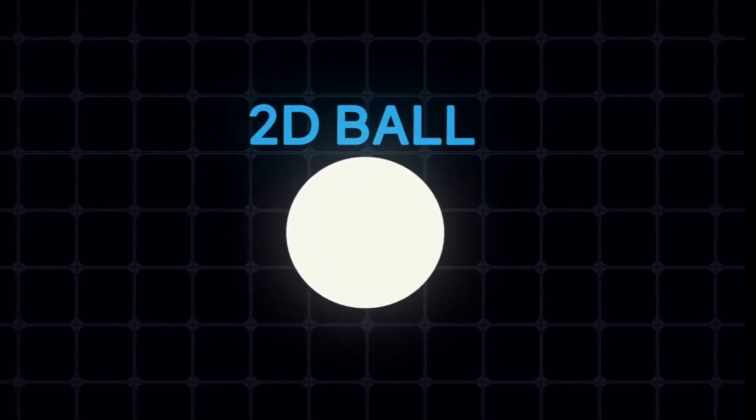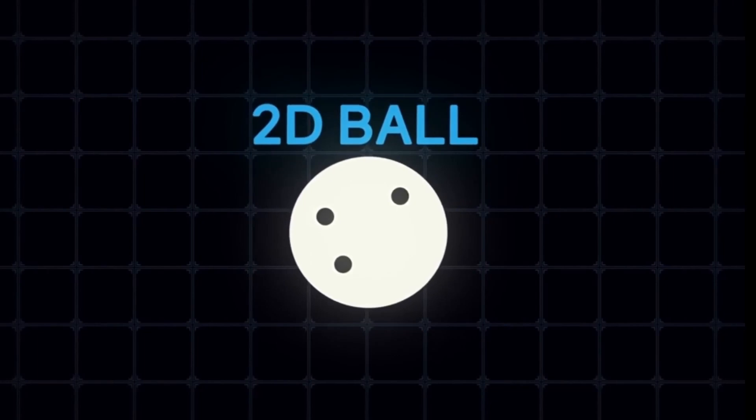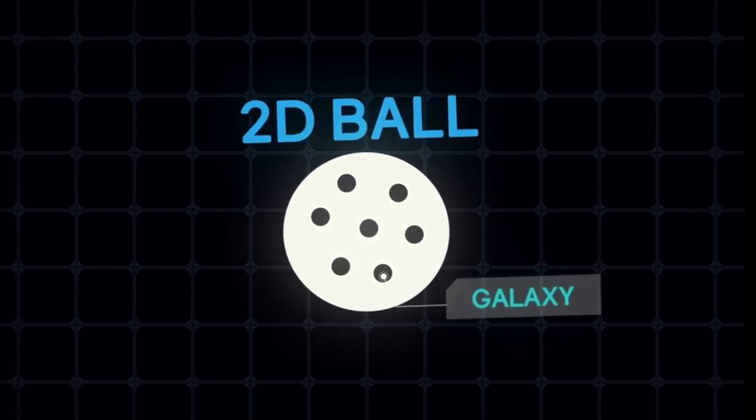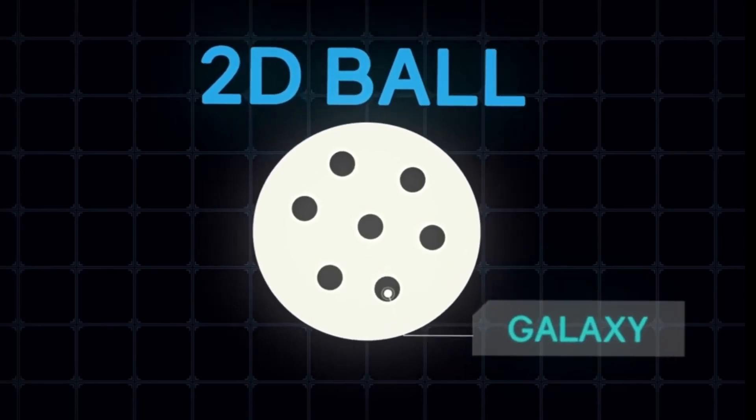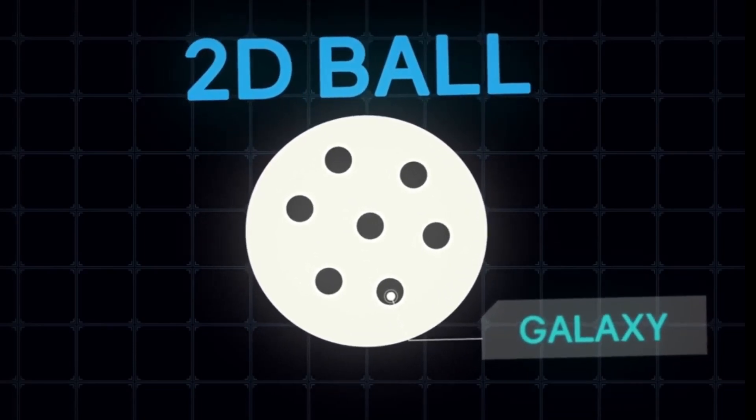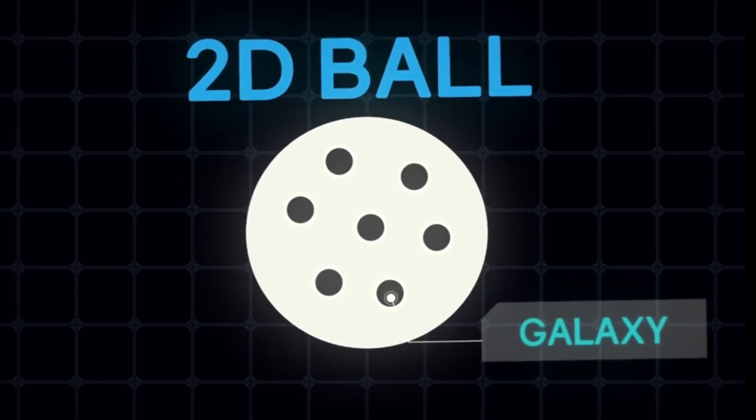Scientists compare the universe expanding after the Big Bang with a two-dimensional ball with points drawn on its surface that symbolize galaxies. If we inflate the ball from the inside, it will grow in all directions equally, and it won't have a specific center. The dots on it will become evenly distant from each other.